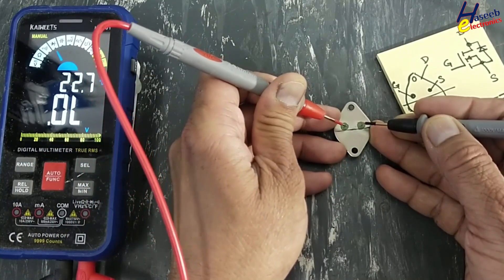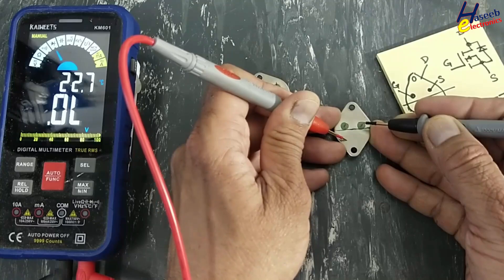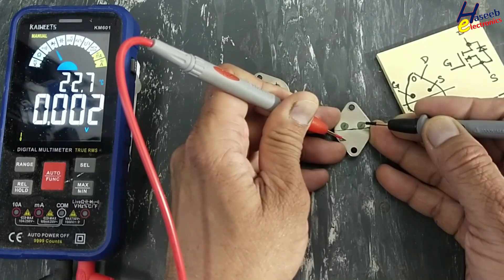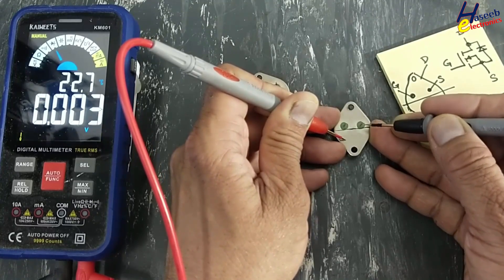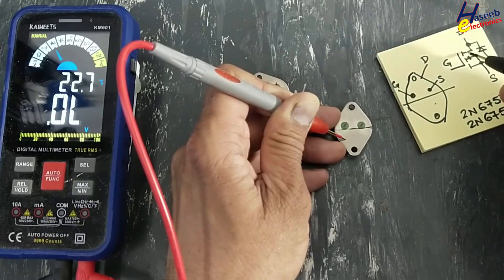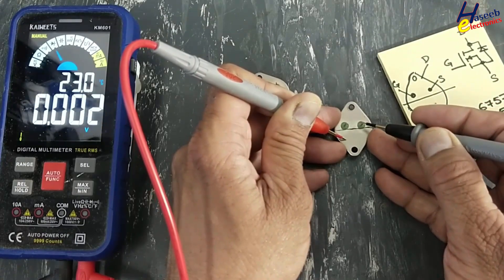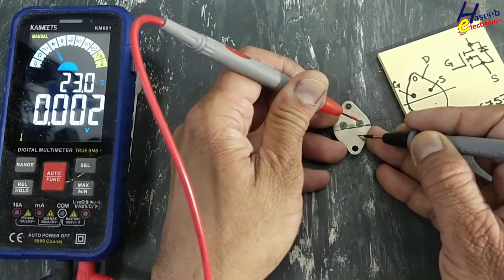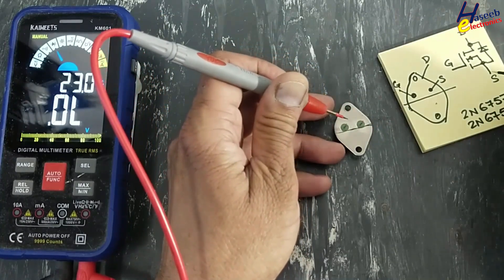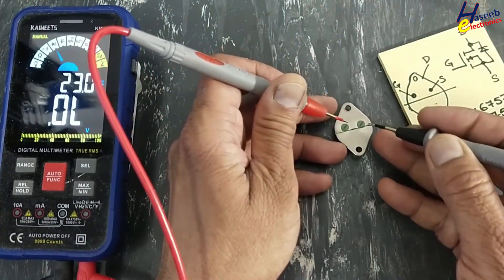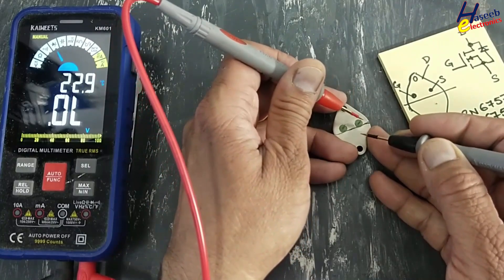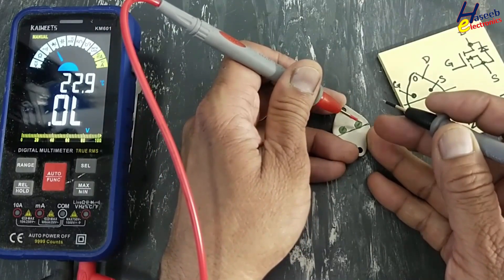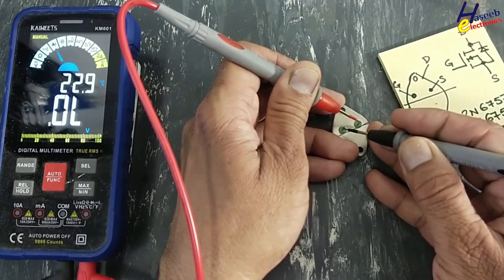Now gate is charged, 0.002 volt drop. The internal resistance of this channel is now decreased, allowing current from drain to source. To discharge it, touch red lead to the source, black lead to the gate.